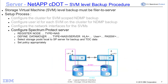If you are doing a storage virtual machine perspective for the cluster backup, the setup process inside of the NetApp device is similar — you'll configure the cluster for SVM scoped NDMP backup, configure a user ID for each SVM on the cluster, and configure the network interfaces for the SVMs. Inside of Spectrum Protect, you'll register the node with type equals NAS, but when you define the data mover, you'll use type equals NASVserver, standing for NAS Virtual Server. You'll then need the high-level address, user ID, and password, then select a storage pool and set the policies appropriately.